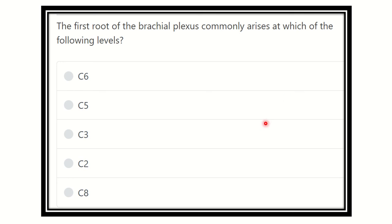Hi everyone, welcome to another video. The uppermost root of the brachial plexus commonly arises at which of the following levels? This is a direct exam question about the past root of the brachial plexus. If we have to find out the root of the brachial plexus, it will be very easy for us to find out the past root of the brachial plexus.